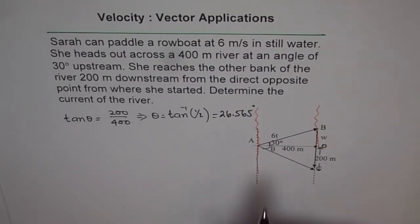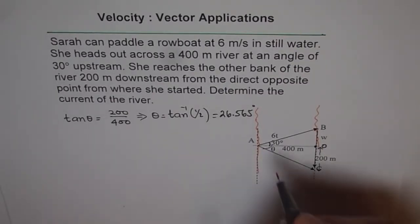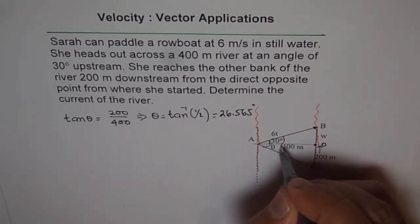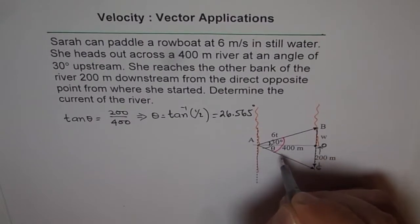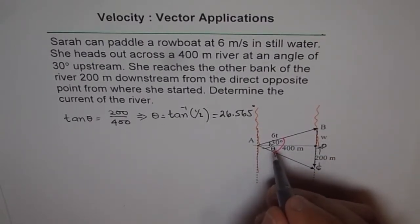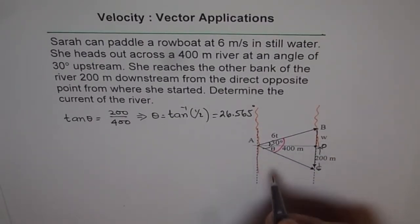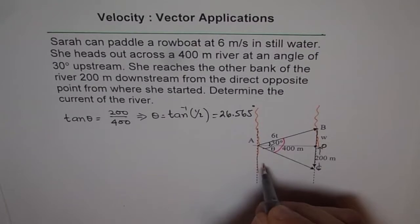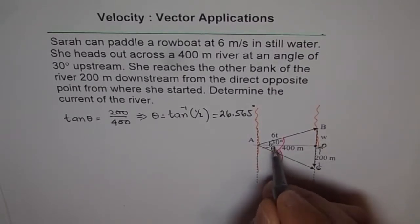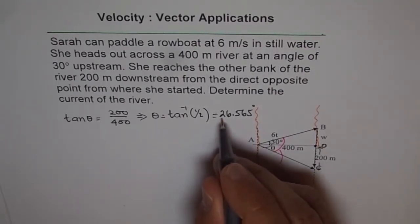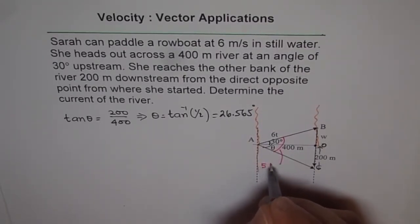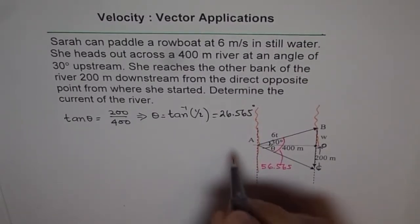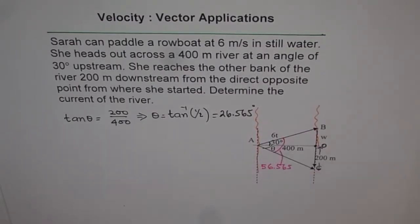Now to solve this triangle: if theta is 26.565 degrees, what is the total angle? The total angle will be 30 plus 26.565, which equals 56.565 degrees. So 56.565 degrees becomes this total angle.